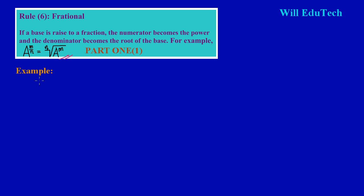Let's look at the whole concept behind this. Let's say you have 8 raised to the two-thirds power — that's example number one. Based on what the rule says, I can rewrite this in surd form. The denominator, 3, becomes my root, so I'm taking the cube root of 8, and the numerator becomes the power, so I raise 8 to the second power inside the radical.